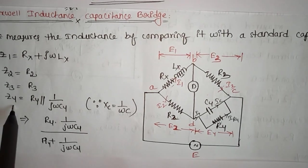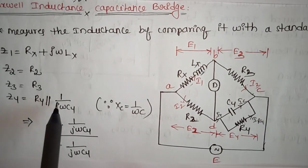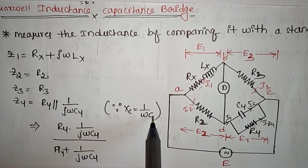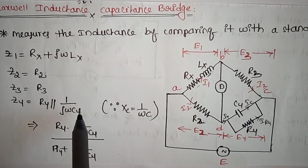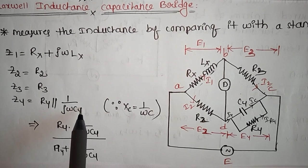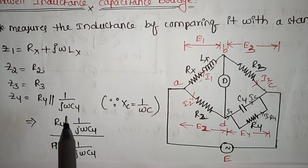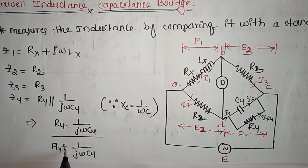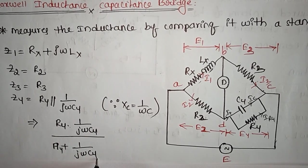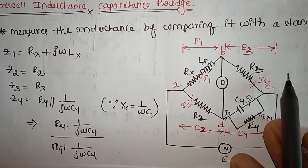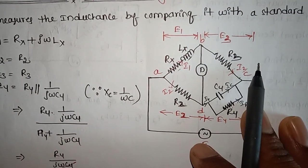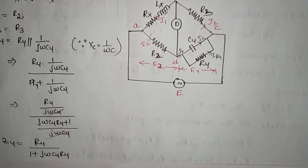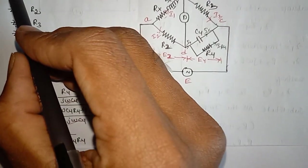Z4 = R4 in parallel with 1/(jωC4). We know that reactance X = 1/(ωC). Solving the parallel equation: Z4 = [R4 × (1/jωC4)] / [R4 + 1/jωC4], which simplifies to Z4 = R4 / (1 + jωC4R4).